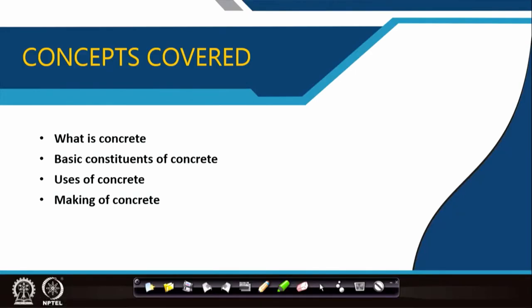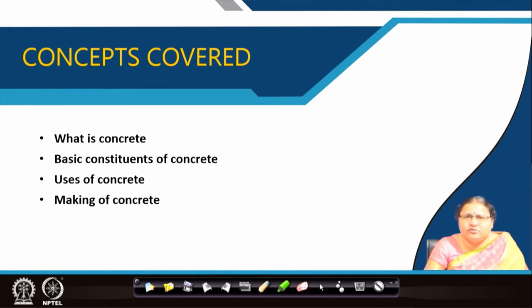Concrete is another building material which we all need to know as architects, and the beauty of it is it can be given any kind of shape which you as an architect desire. Civil engineers are with us to design exactly whatever shape you want — they will come up with the reinforcement plan. You will have some basic ideas about reinforcement, because concrete is a very good material in compression but it cannot take tension that much. In this lecture, we will try to cover what is concrete, the basic constituents of it, the use of concrete, and particularly the making of concrete.